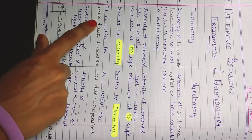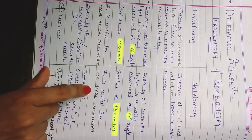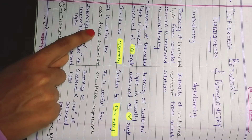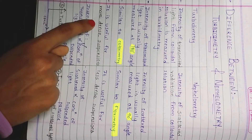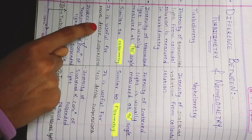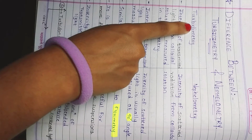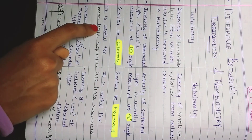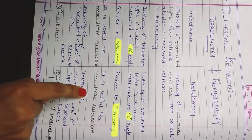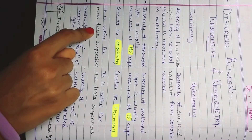The next point: turbidimetry is useful for more dense suspensions, whereas nephelometry is useful for less dense suspensions. Here is a trick to remember: in 'turbidimetry' there is a 'D' — D stands for density or more dense solution. So turbidimetry is useful for more dense suspensions and nephelometry is useful for less dense suspensions.